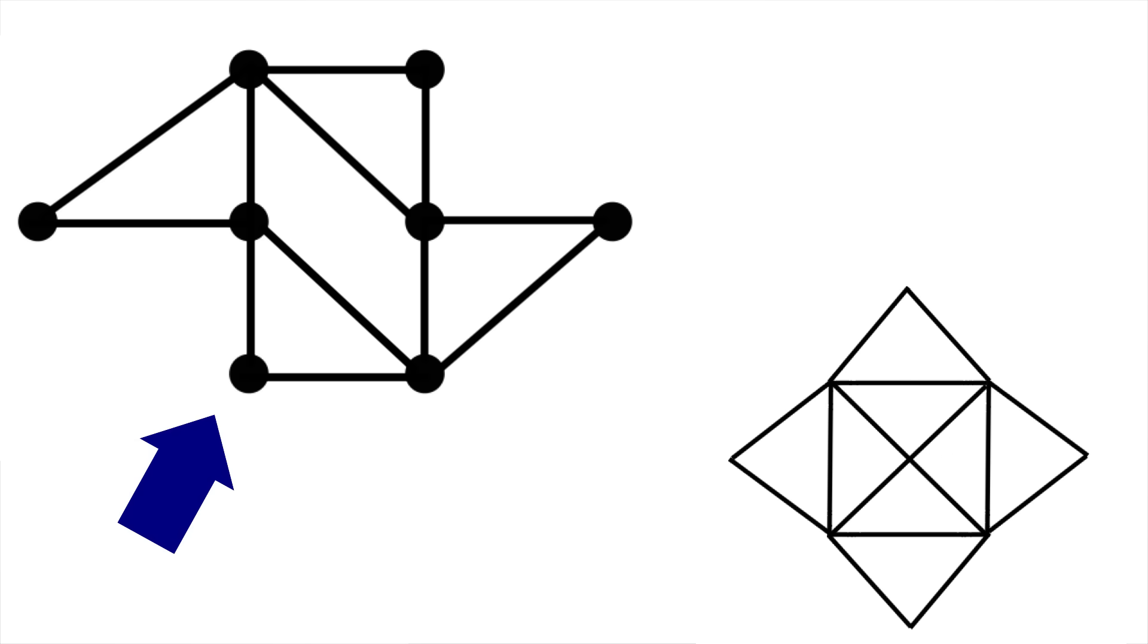So why can we find a path here that goes to every city once without reusing a road, but we cannot draw this shape without retracing a line? Well, on this graph that we can find a path for, we have to start somewhere. We then have to go to some node via some line or edge. Then we have to leave that node and go to a second via a different line or edge. Every time we take one line to get to a node and another line to leave it.